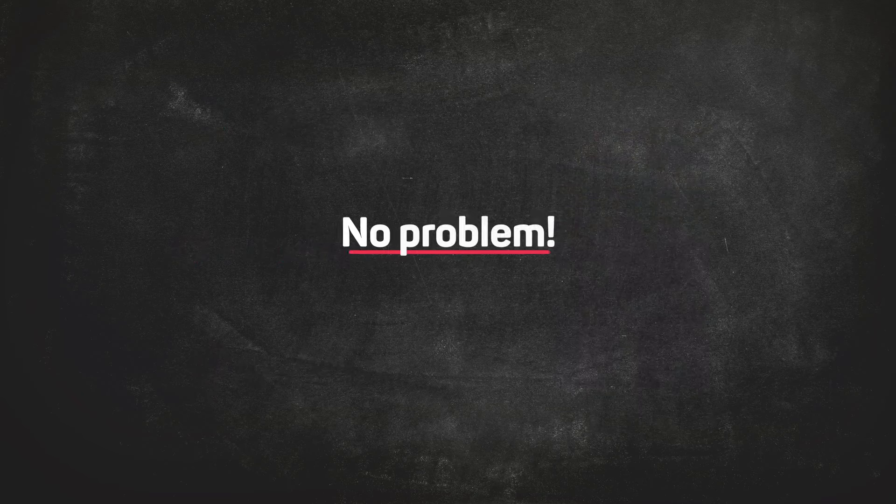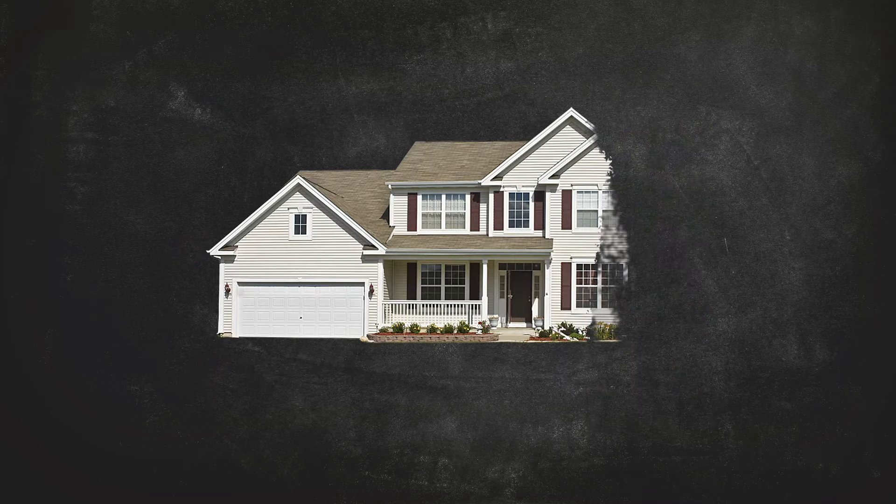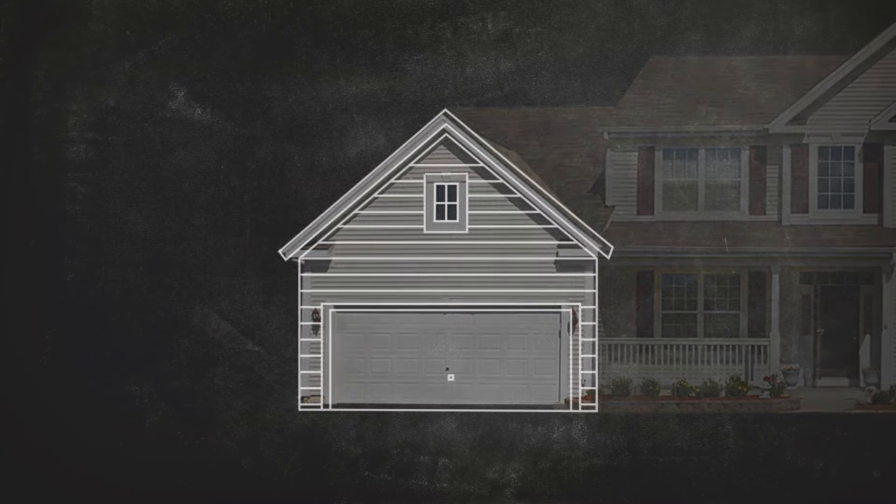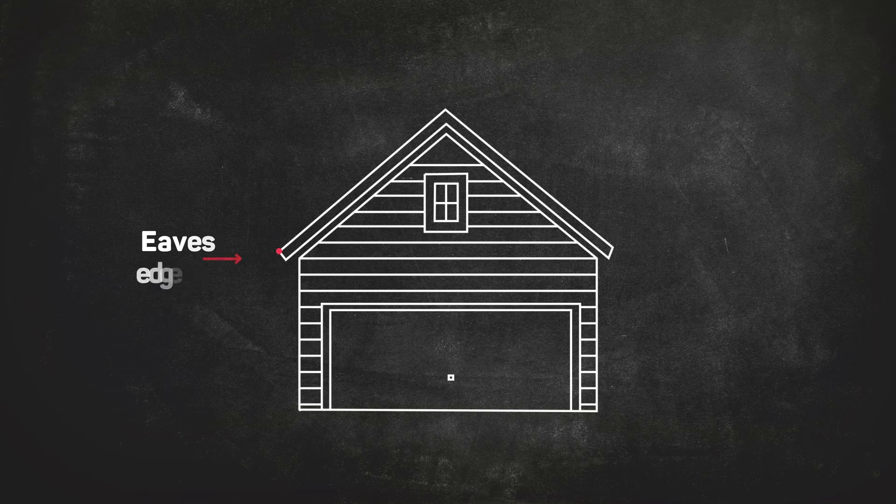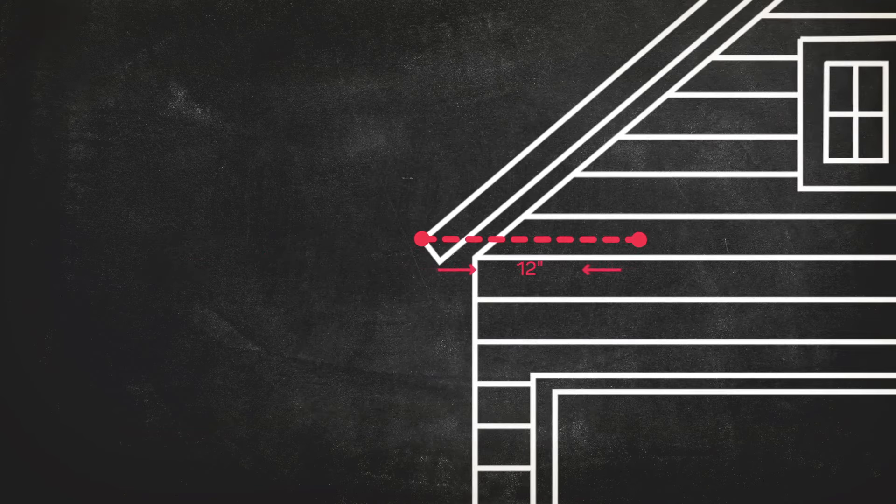Not comfortable in the digital space? No problem. Let's walk through the process of measuring slope using nothing more than a tape measure. Take your measuring tape to your eaves edge, positioning it as close to the wall as you can go. Measure out 12 inches exactly. This will be the run of your slope.